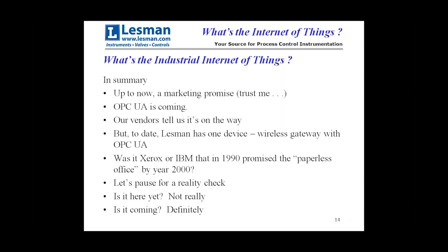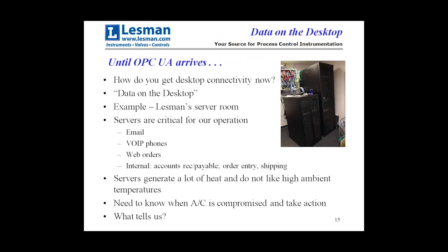To put it in perspective: was it Xerox or IBM that in 1990 promised the paperless office by the year 2000? Here we are in 2015 and we don't have a paperless office, but we're a long way there. So the reality check is: is OPC UA here yet? Not really. Is it coming? Yes, definitely. So until it arrives — what do you do? How do you manage connectivity to a desktop?